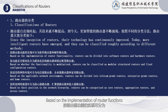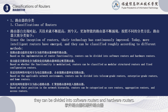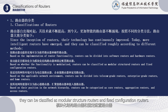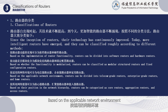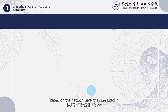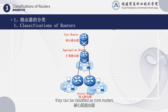Based on the implementation of router functions, they can be divided into software routers and hardware routers. Based on whether the functions are modular, they can be classified as modular structure routers and fixed configuration routers. Based on the applicable network environment, they can be divided into carrier-grade routers, enterprise-grade routers, and home routers. Based on the network level they are used in, they can be classified as core routers, aggregation routers, and access routers.